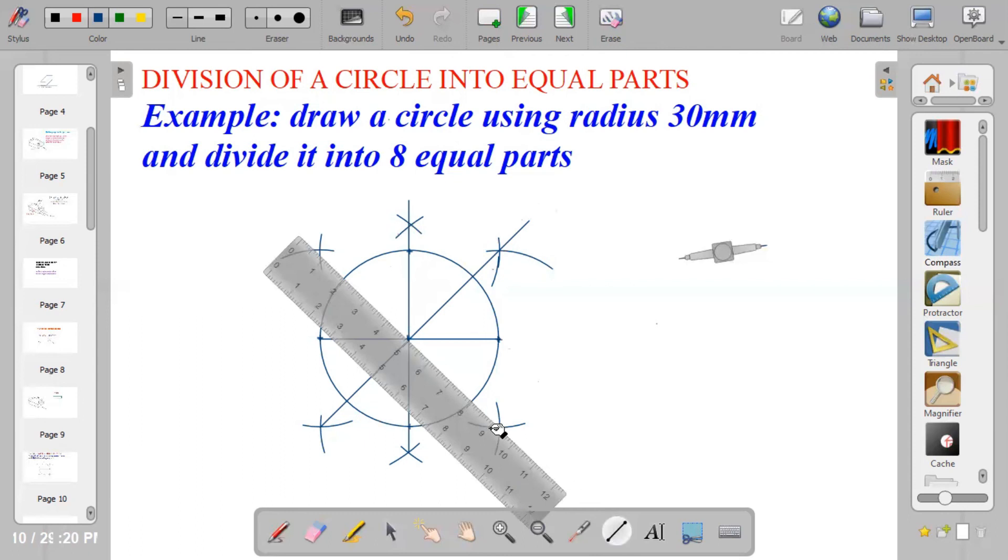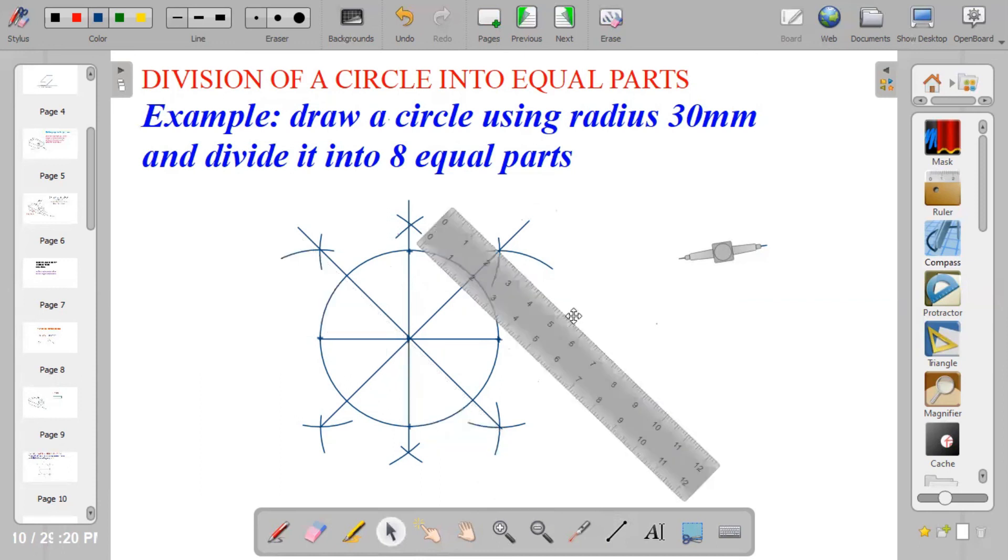Bring out your ruler and draw a line through the points of intersection. That gives you the division of the circle into its equal parts. Let's count: one, two, three, four, five, six, seven, and eight divisions. In my next video, I'll show you how to divide the circle into 12 equal parts. Watch out.